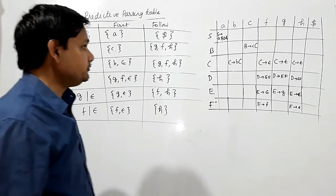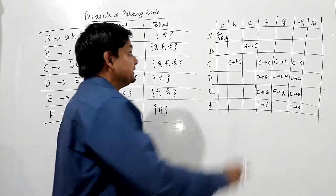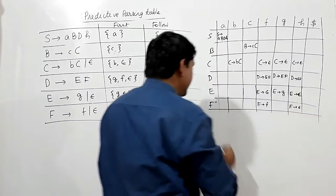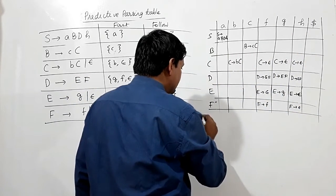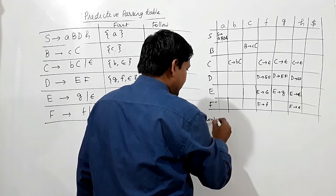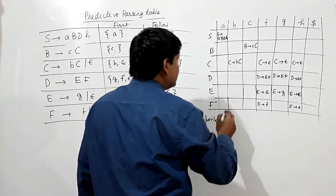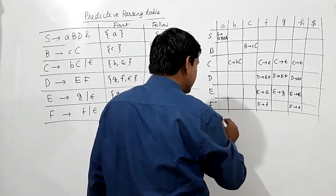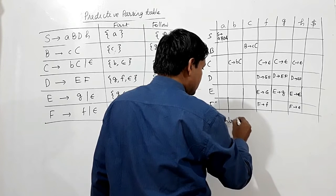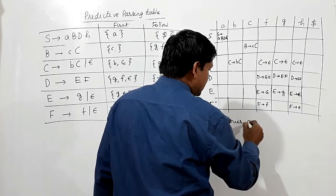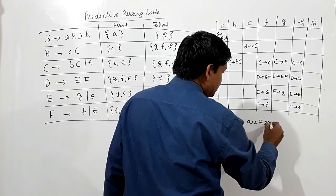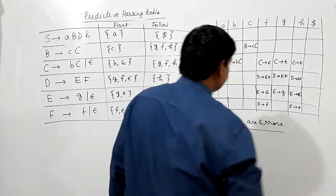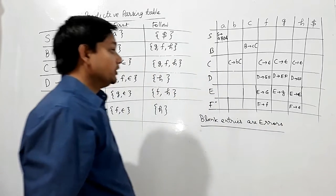The blank entries in the parsing table are known as blank spaces or blank entries, and they represent errors.